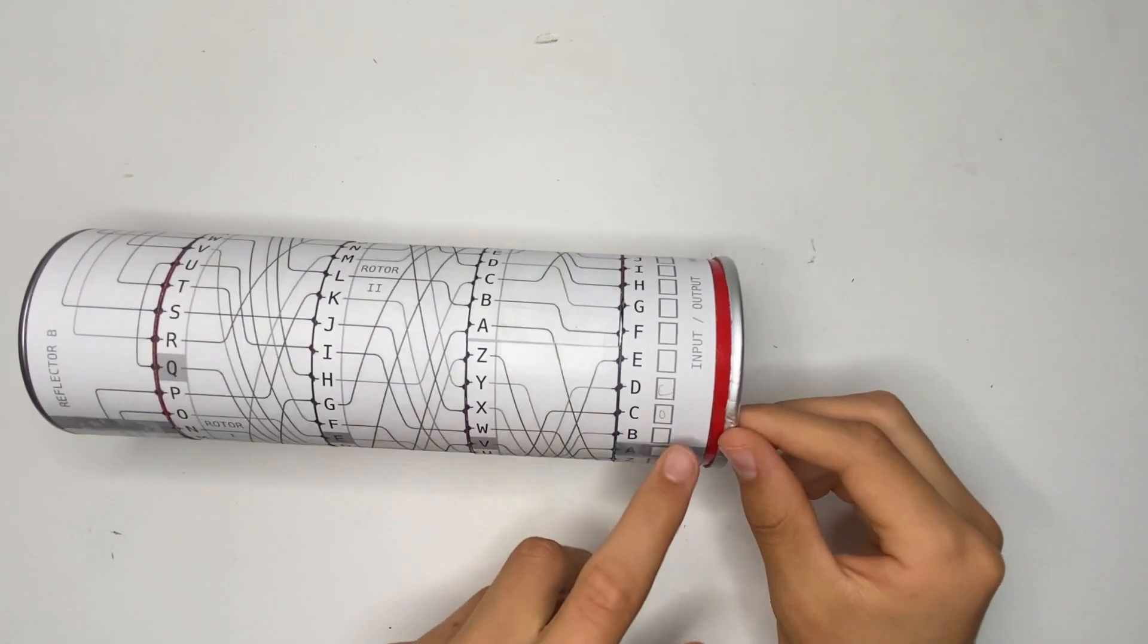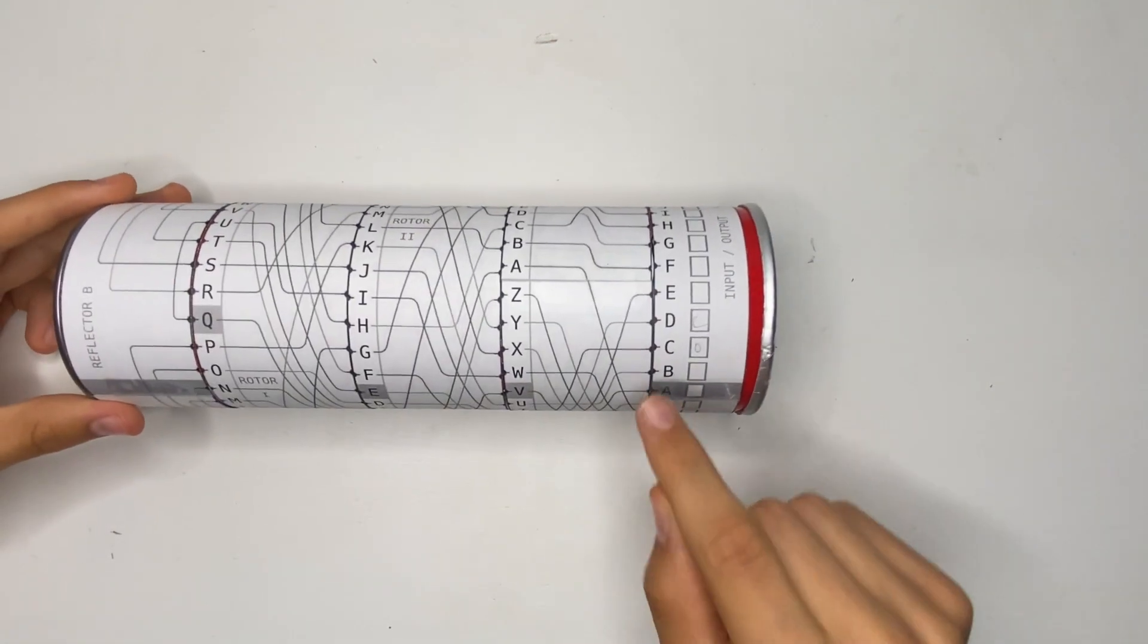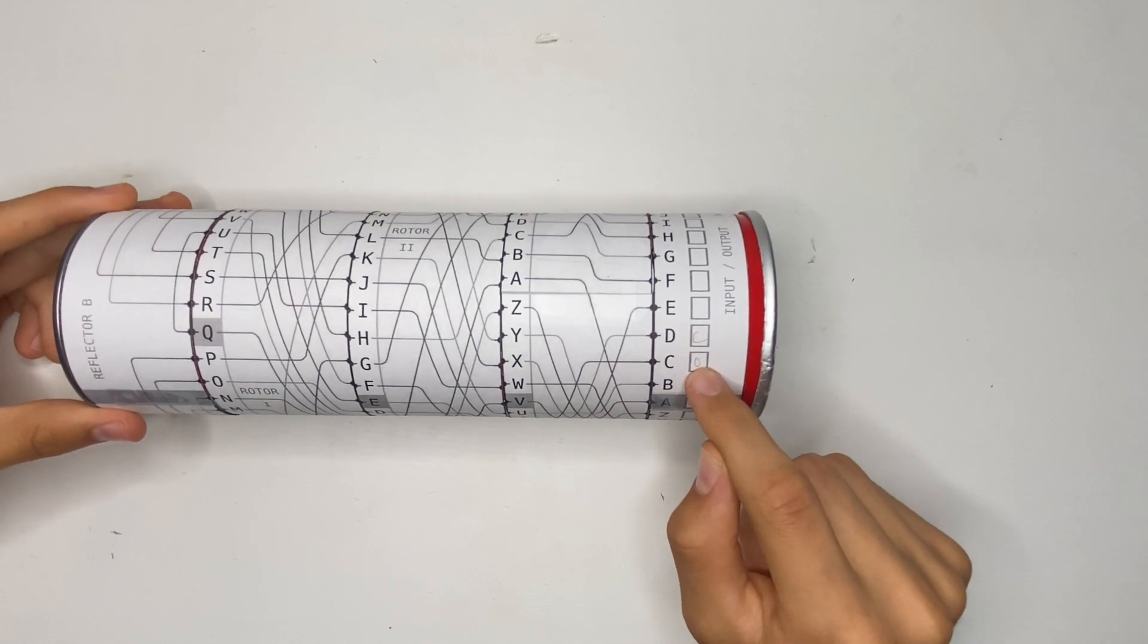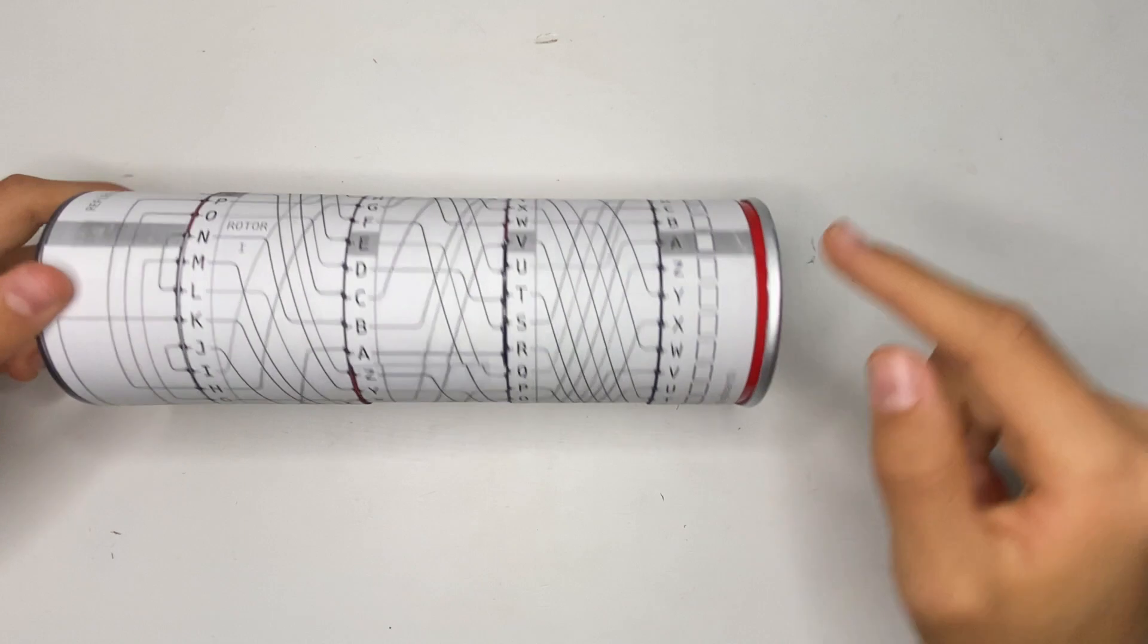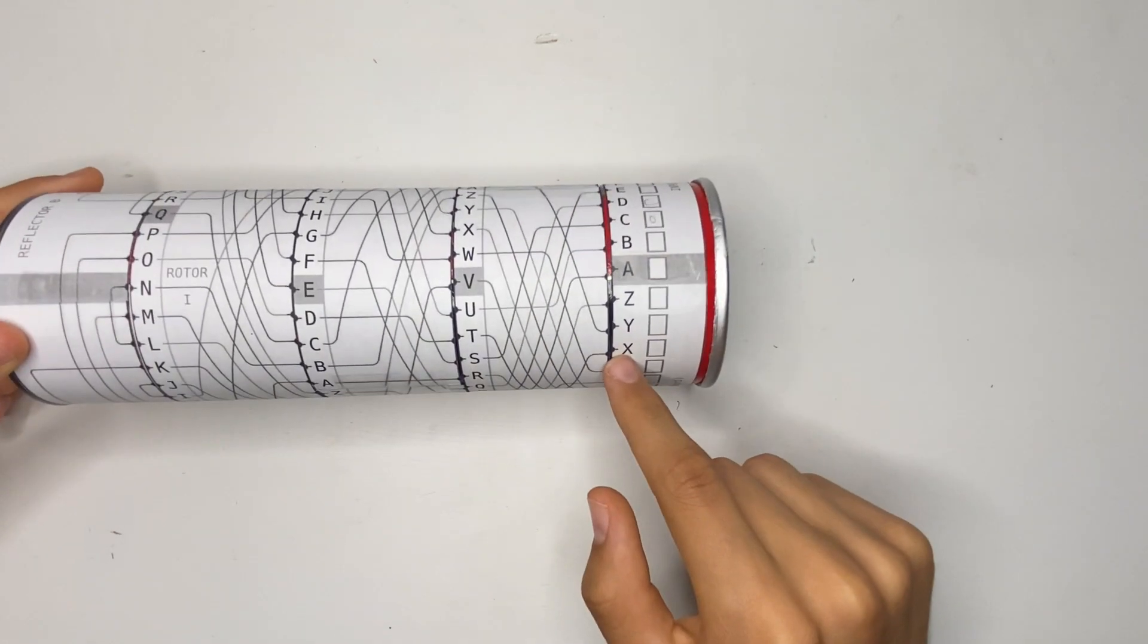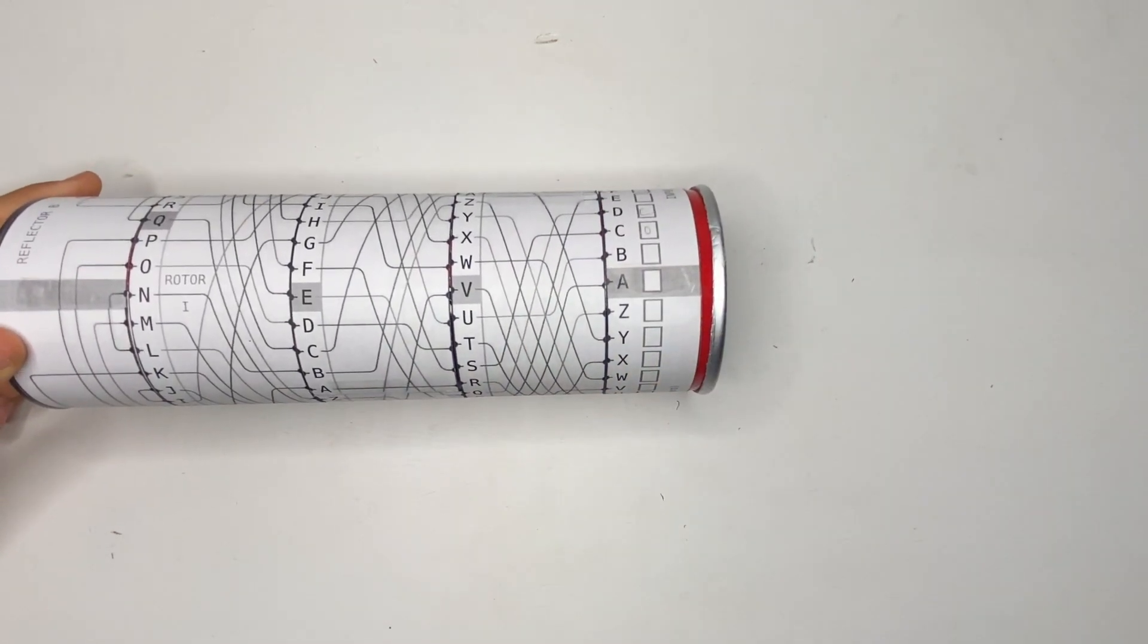So when we're going to try and encrypt a C, we're going to see that it's connected to D, and we're going to actually follow D's path. And when it comes out to whatever letter, we'll then look at whatever that's connected to on the plug board.